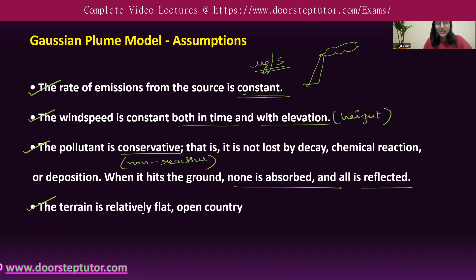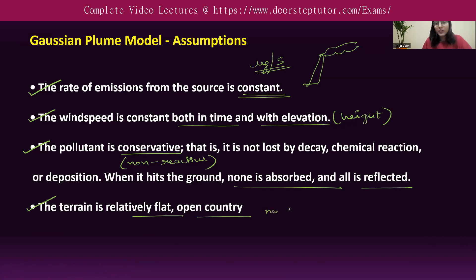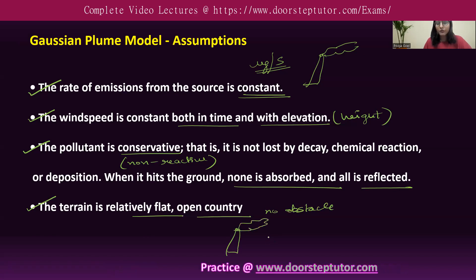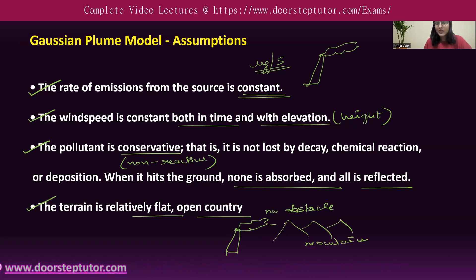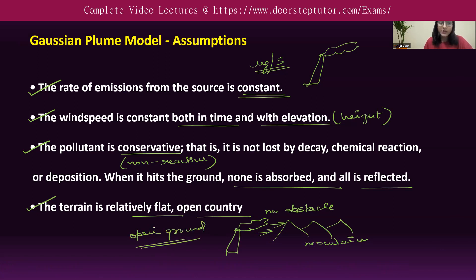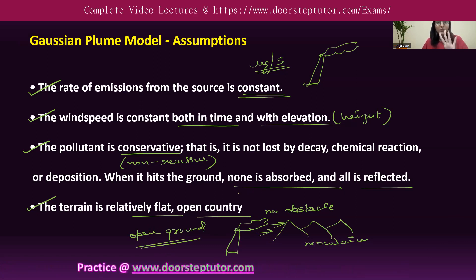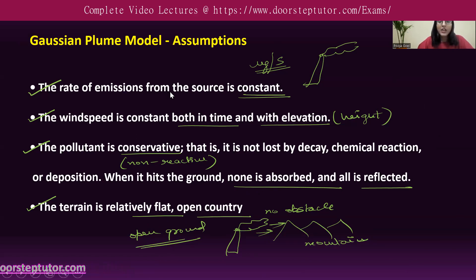The fourth assumption is that the terrain is relatively flat and open country — meaning there should be no obstacles. For example, if a chimney is emitting smoke and mountains are present nearby, those mountains would act as obstacles. Under the Gaussian plume model, we assume we have open ground with no such obstacles, so the terrain is relatively flat and open. These four are the most important assumptions when calculating pollutant concentration using the Gaussian plume model.